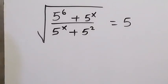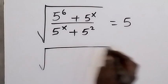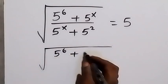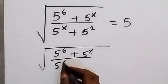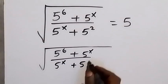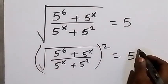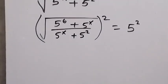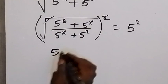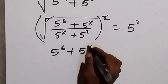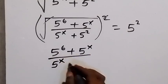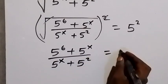Hello, you are welcome. How to solve this nice algebra equation. From here we can take the square on both sides to remove the square root, so we have the square root of 5 raised to power 6 plus 5 raised to power x, over 5 raised to power x plus 5 raised to power 2. We square this side and also the other side, which equals 5 squared.